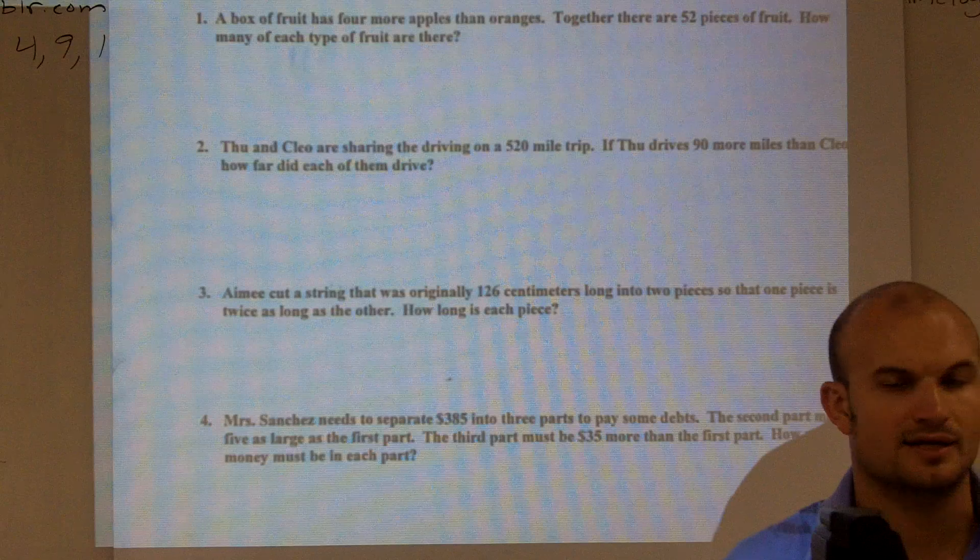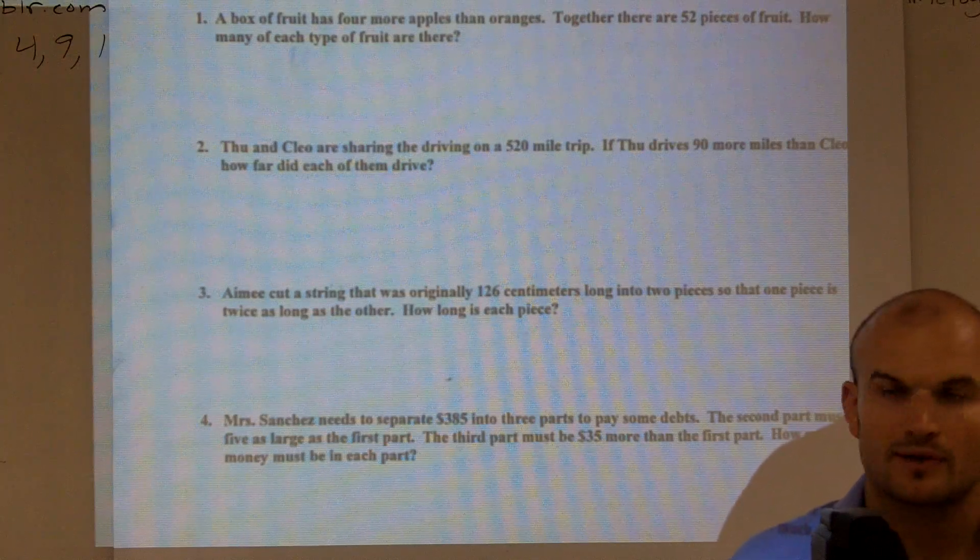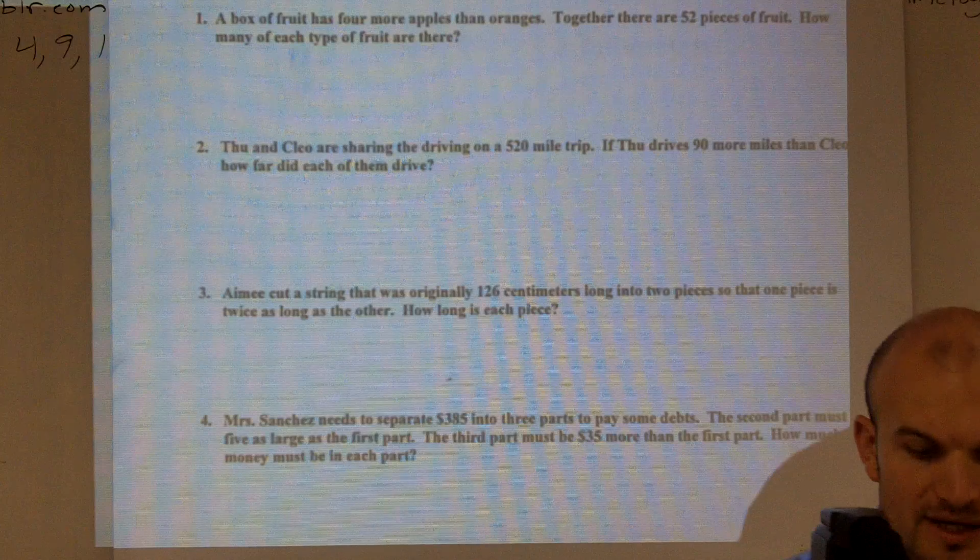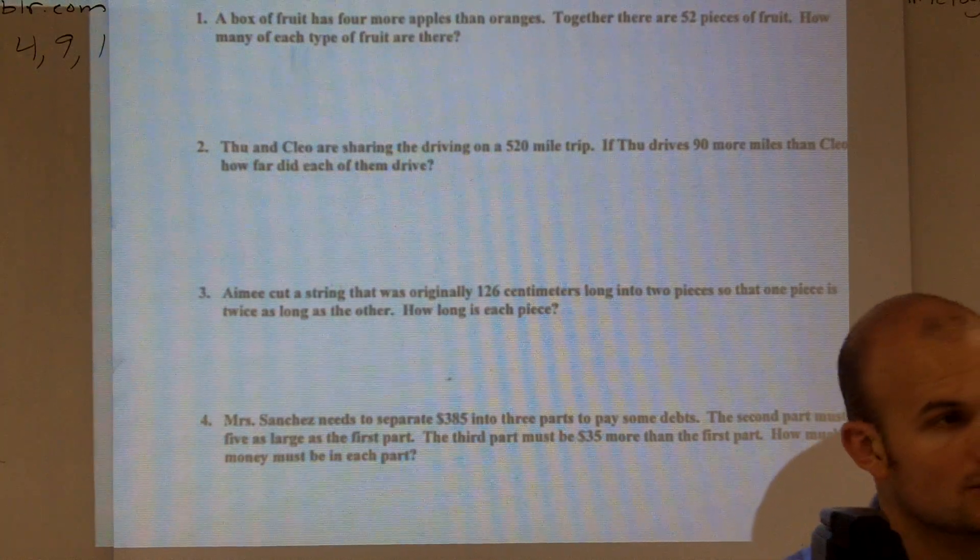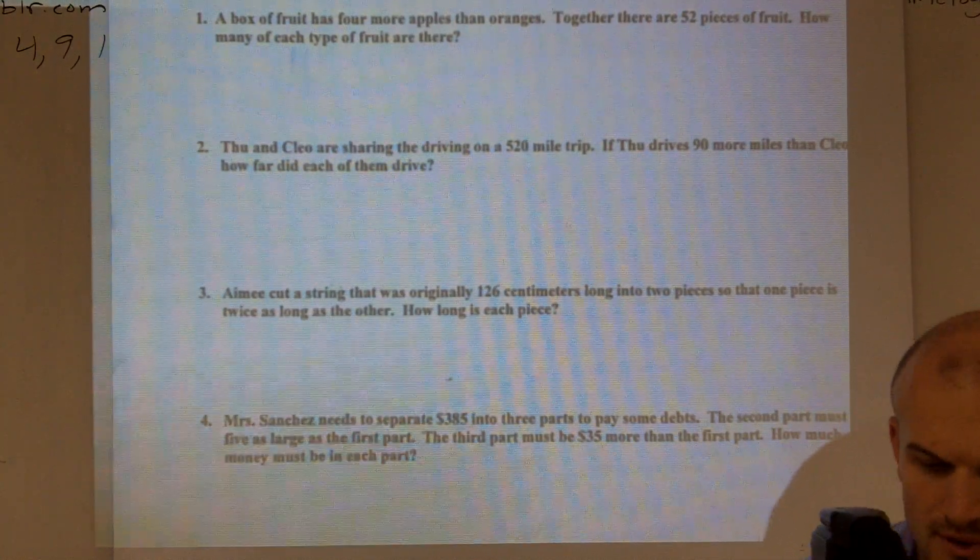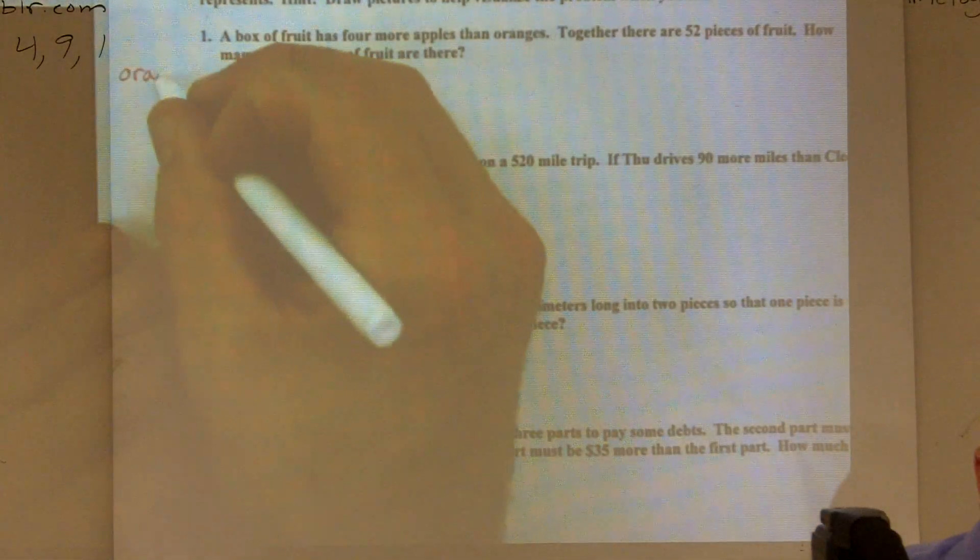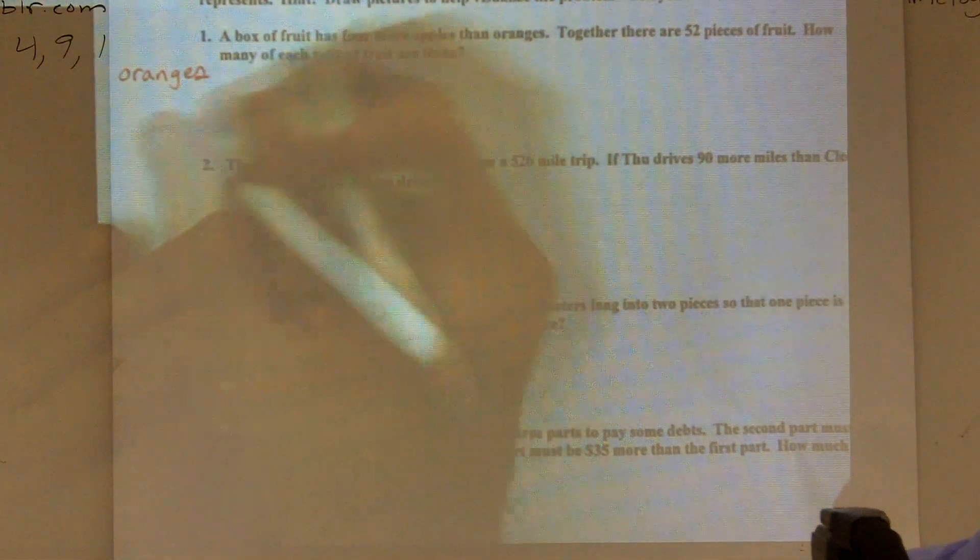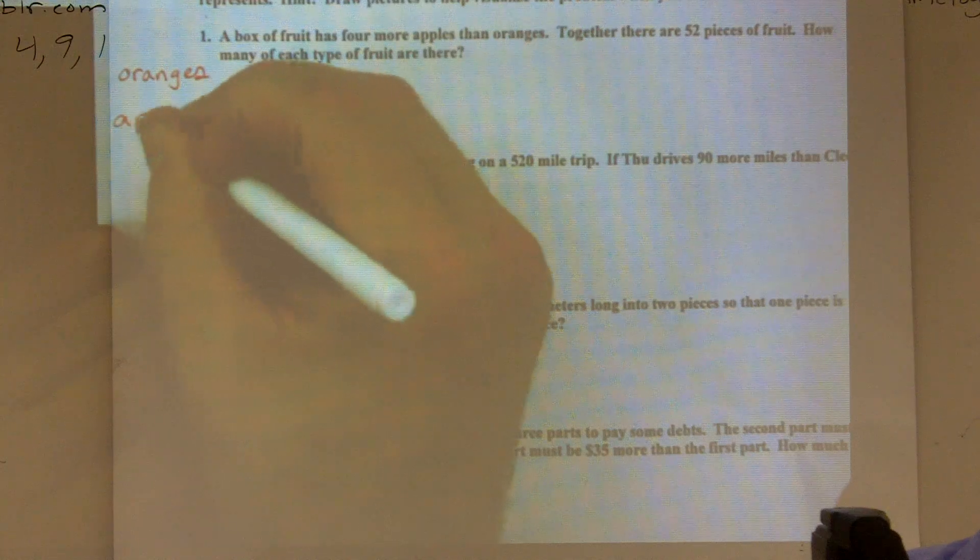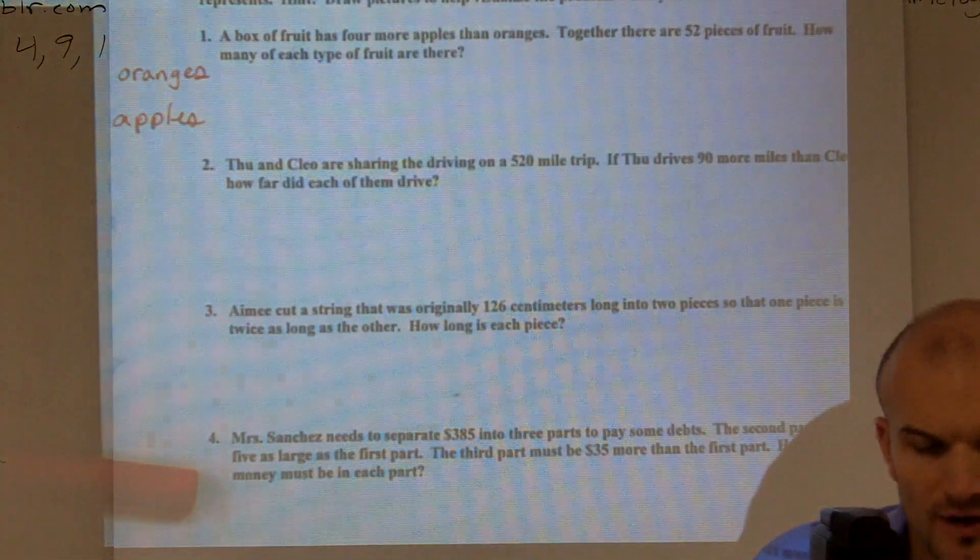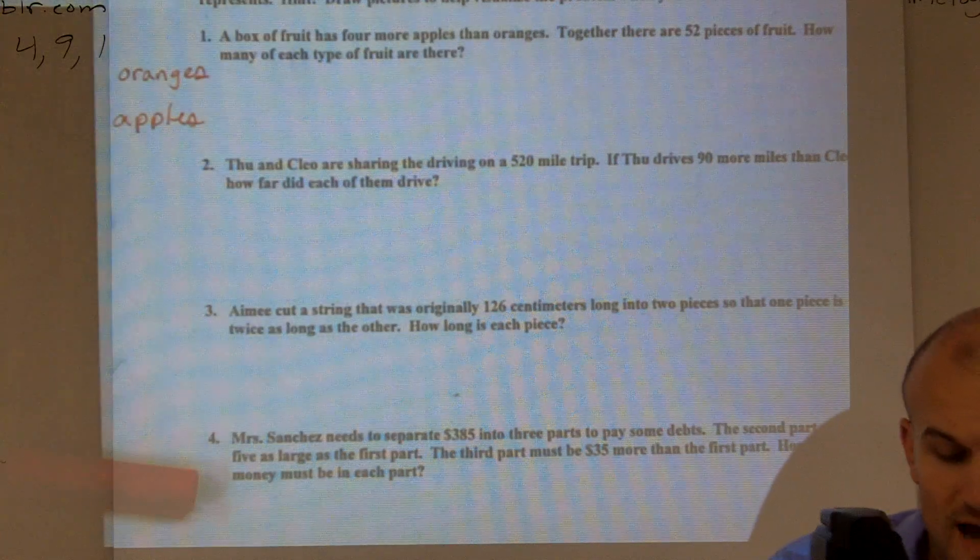So the next thing I want to look at is, I've read through the whole problem. The next thing I want to do is determine what is the question asking me. And they're saying how many of each fruit. So I need to know how many oranges there are and how many apples. So I'm just going to write oranges, we need to figure some out, and apples. So we have oranges and apples. We need to figure out what those values are.